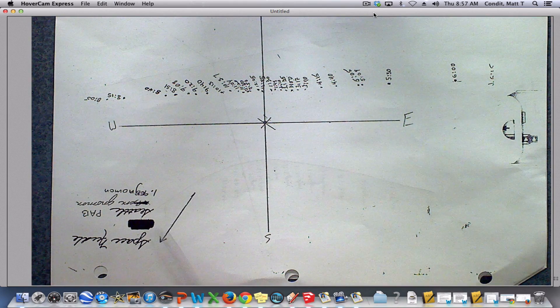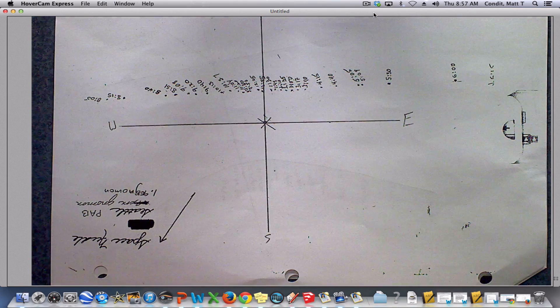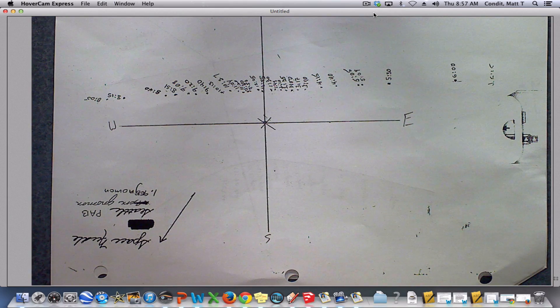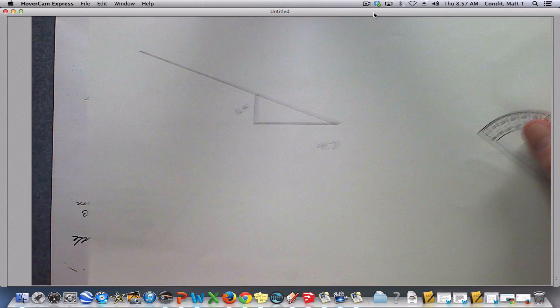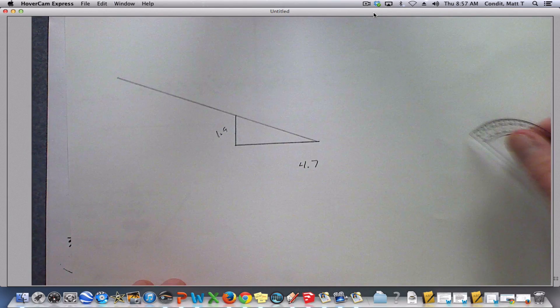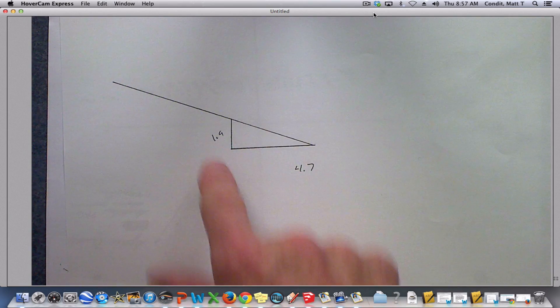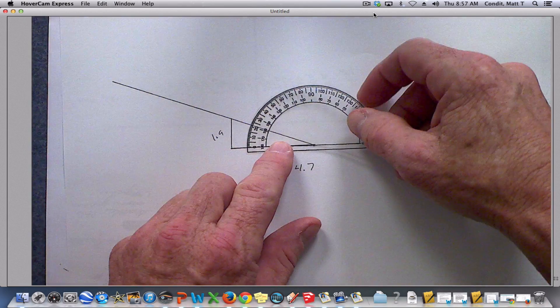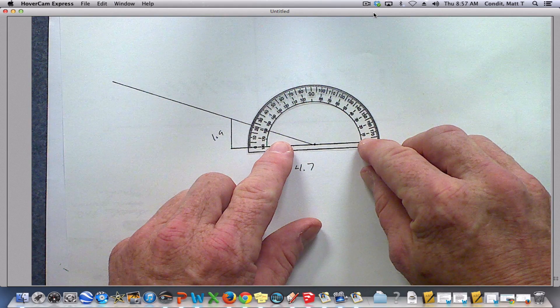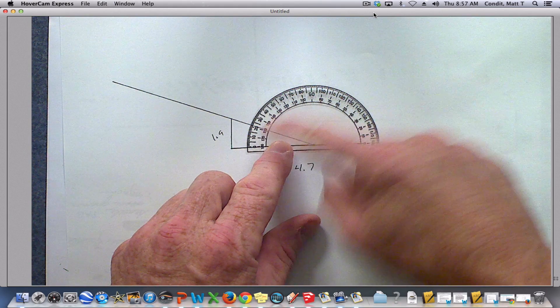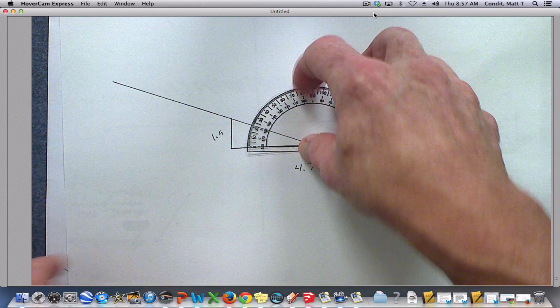And I know my gnomon is 1.9 centimeters tall, which means that I have to actually physically draw that triangle. And this side is 4.7 centimeters by 1.9. Then I just put my protractor on here and you can see the angle or the altitude that is about 22 degrees.